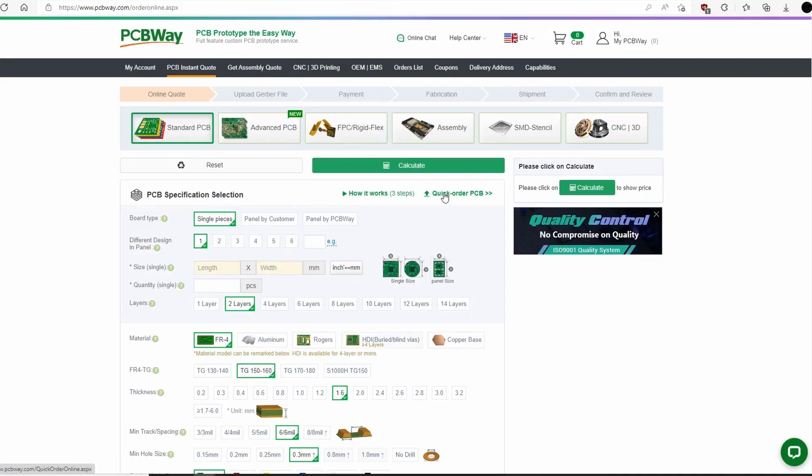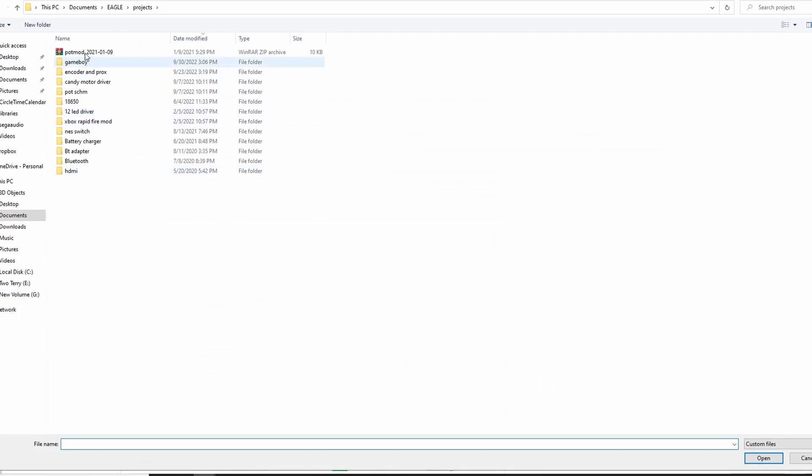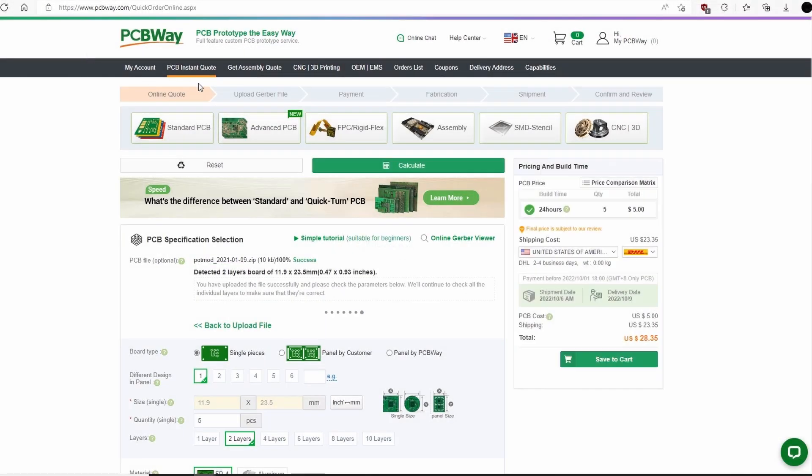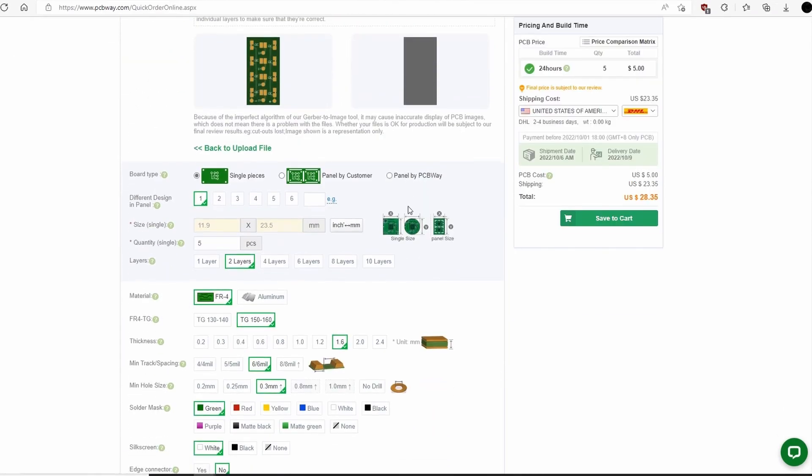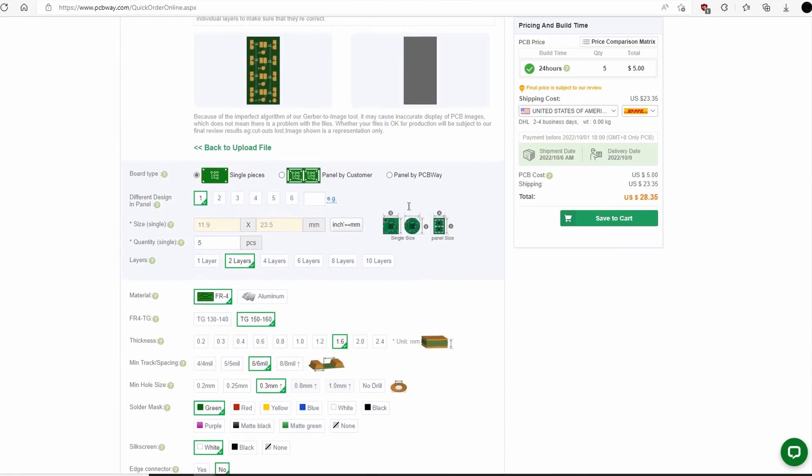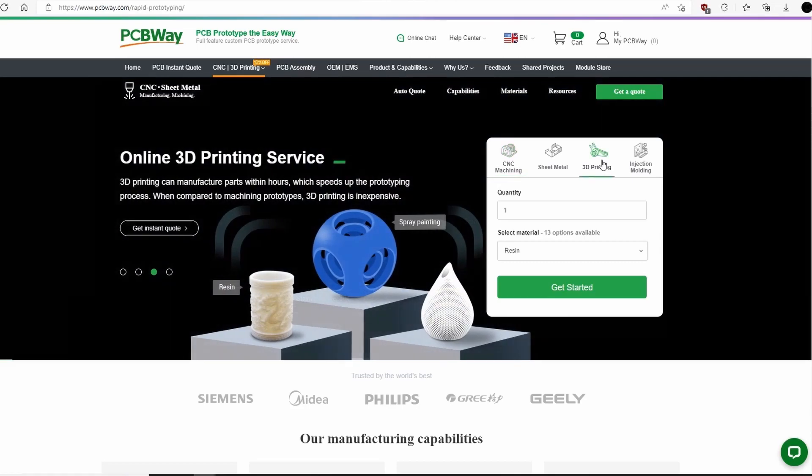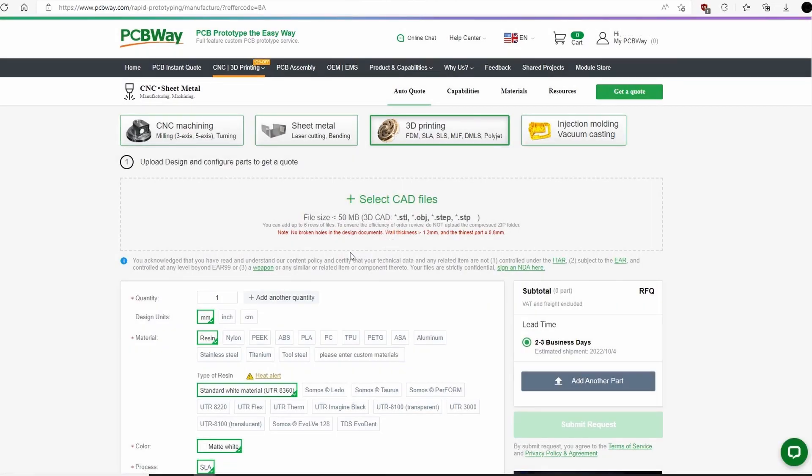Since we're on the subject of PCBs, this video is sponsored by PCBWay. They offer a variety of PCB services ranging from standard PCB to rigid flex. Simply upload your Gerber files for a quick build time and amazing quality PCBs. In addition to PCBs, they also offer CNC, injection mold, and 3D printing services, which I'll definitely be using in the future. Definitely check out their website and thank you so much PCBWay for sponsoring my channel.